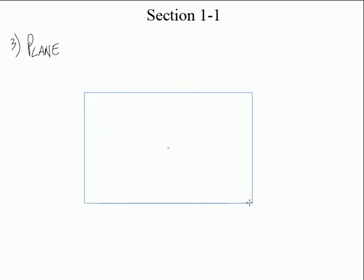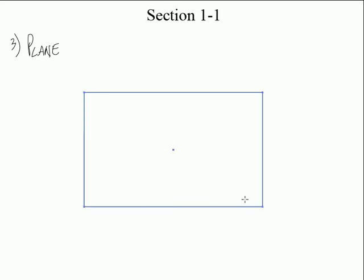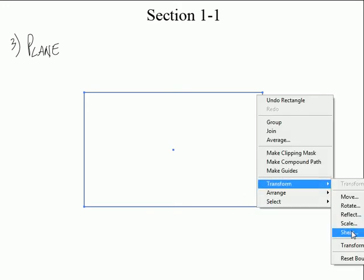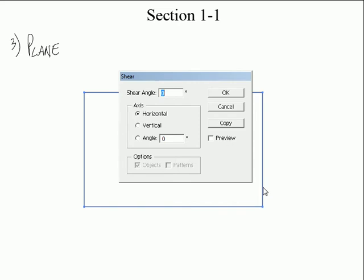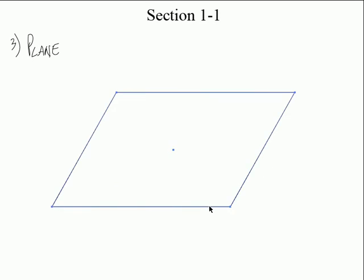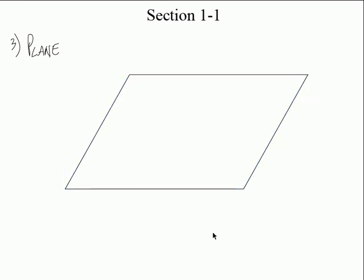This is basically what a plane looks like. When they draw this in your book, it'll look slanted like that. For some reason, that's the way they like to draw their planes. A plane is basically just a whole bunch of lines — lines everywhere, all lined basically on a flat surface.